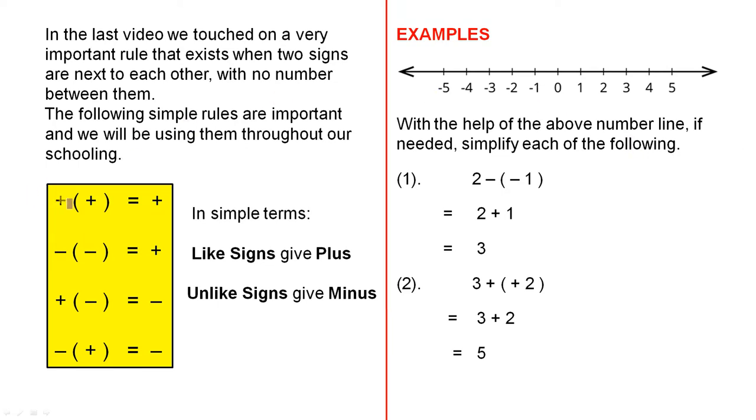When you have a plus sign followed by another plus sign, they translate into a single plus sign. When you have two minus signs next to each other, they translate to a plus sign. When you have a plus followed by a minus, that translates to a minus sign. And when you have a minus followed by a plus, that translates to a minus sign.